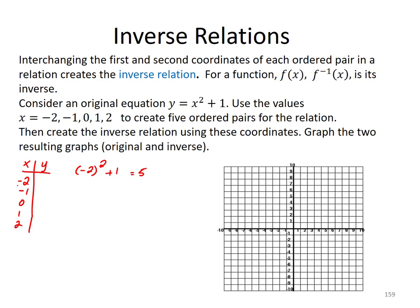So my y values corresponding to the x values are, well, I'll just read the ordered pairs. Negative 2, 5. I have negative 1, 2. I have 0, 1, 1, 2, and 2, 5.